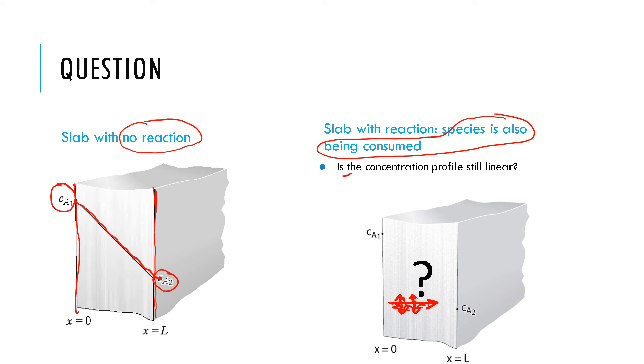So for a situation that has diffusion plus reaction, is the concentration profile still linear? And then does the flux at the surface increase or decrease compared to the no reaction scenario? These are the questions we would like to answer qualitatively. Can you answer these two questions?